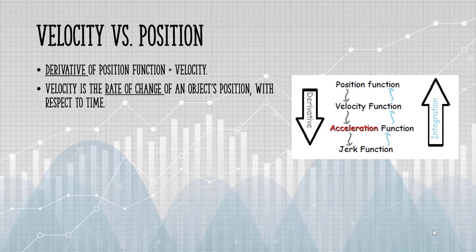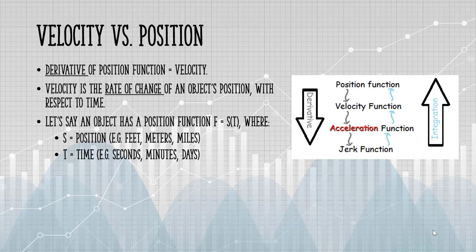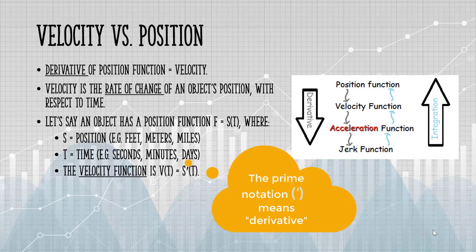Let's say an object has a position function, or s of t, where s is a position in feet or meters or some similar measure, and t is time. That could be in seconds, hours, milliseconds, and so on. Our velocity function is going to be the derivative of s of t. Let's look at an example.